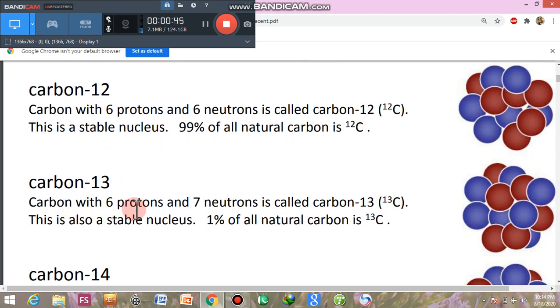Carbon-13. This atom has 6 protons and 7 neutrons. This is written in this form carbon. C represents the carbon and 13 should be written in the superscript. This is also a stable nucleus. 1% of all natural carbon is present in carbon-13 form.